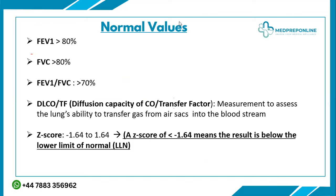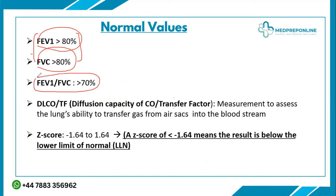In a normal individual, FEV1 is greater than 80 percent, and FVC is also greater than 80 percent. The FEV1 to FVC ratio should be greater than 70 percent in a normal individual. We will discuss how to interpret these when we analyze lung function test results.